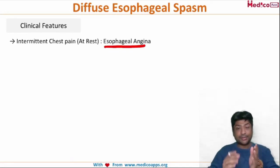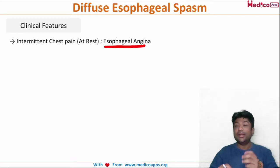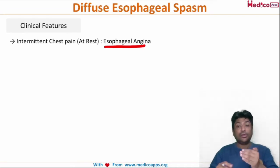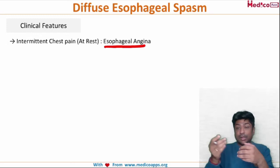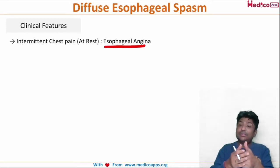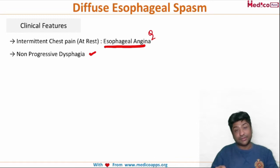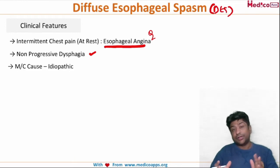What happens here is that the pressure in the esophagus is very very high. We know that our blood pressure is 120/80 mmHg. The normal esophageal pressure is around 25 mmHg — if it rises to more than 120 mmHg, it will press on the blood vessels in the esophagus, leading to angina. That is why it is called esophageal angina. You can also have a history of non-progressive dysphagia. The most common cause of diffuse esophageal spasm is idiopathic — no clear-cut cause.